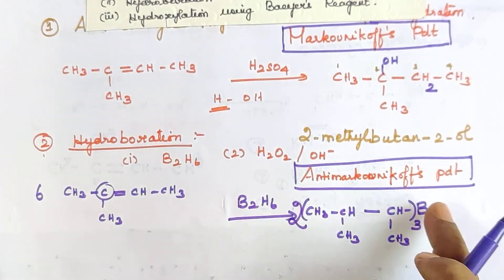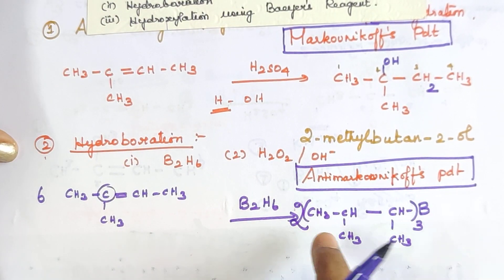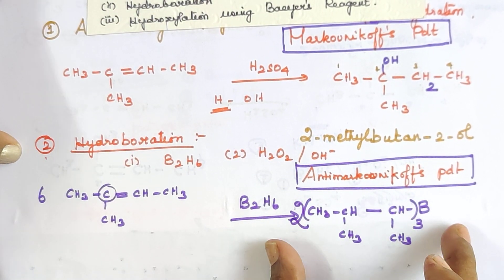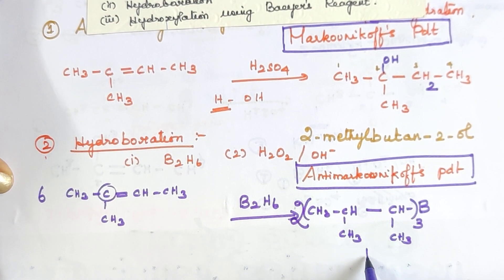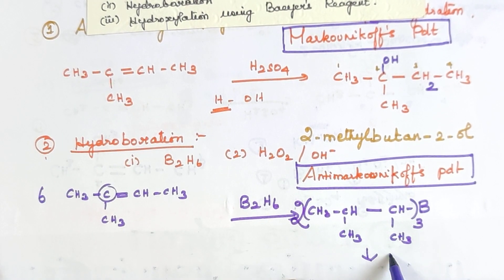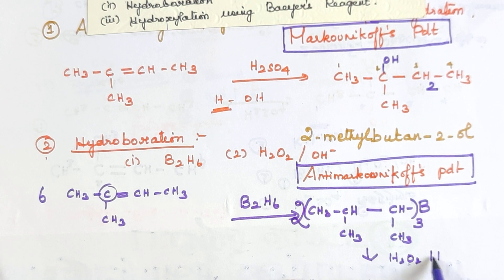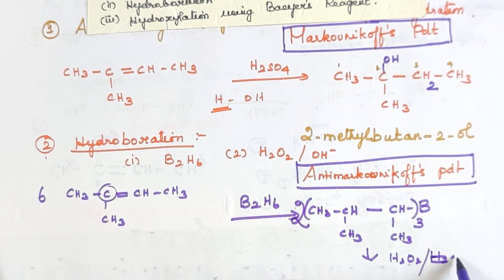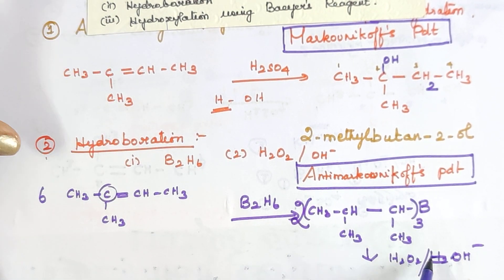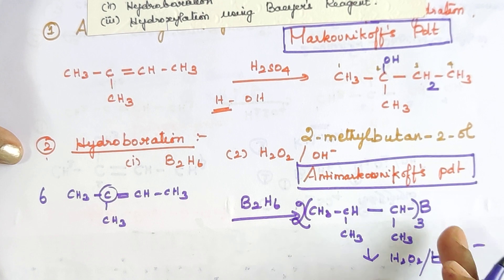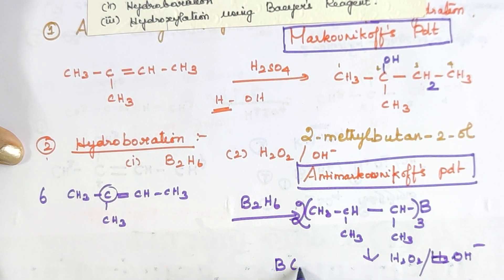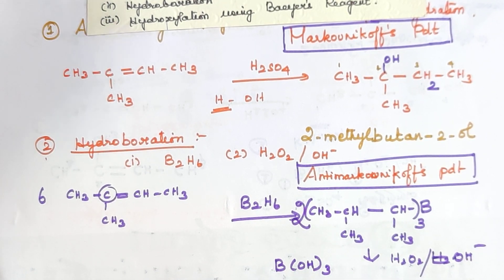In the second step, hydrogen peroxide in the presence of base (OH⁻) is added. BH₃ intermediate reacts with H₂O₂ and OH⁻ to give boric acid as a byproduct and the alcohol as the main product.